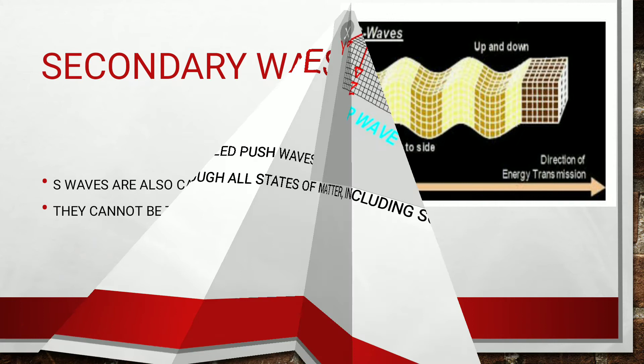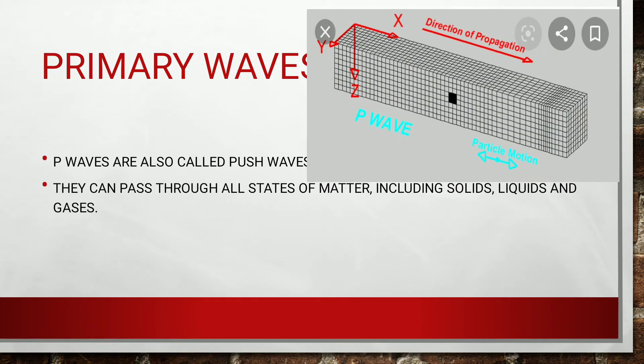L-waves are surface waves or long waves. They travel along the surface of the earth and are recorded after the P- and S-waves. There are two types: Love waves and Rayleigh waves. The P- and S-waves travel to the interior of the earth, while surface waves are the last to arrive.